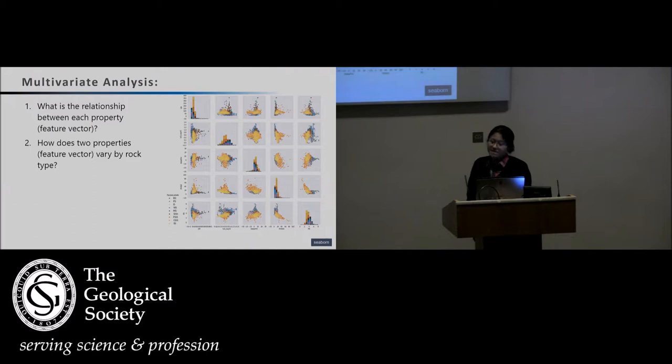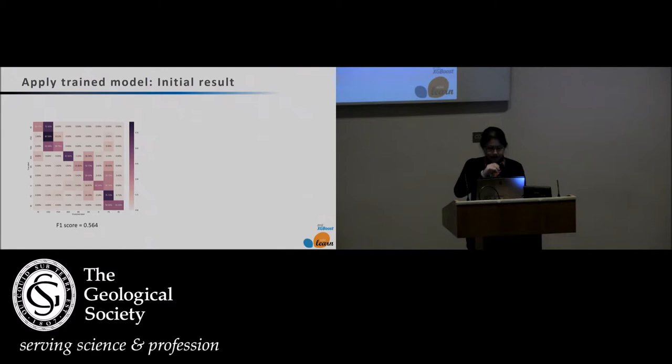The second step is to understand the multivariate distribution of all these different properties or feature vectors and how they vary by rock type, using scatter plot matrices. If you can see this tiny part here, I'll put the open tool software that we use for that.